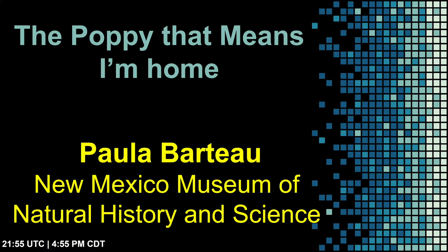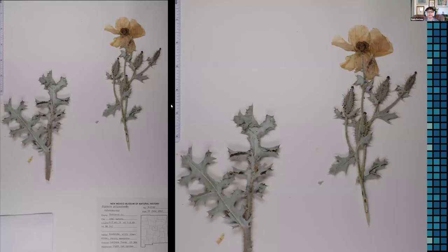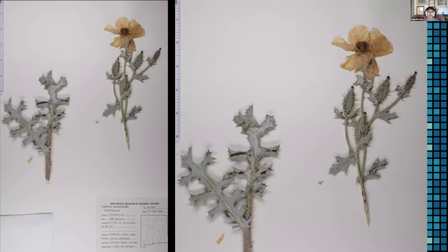Paula Bartow from the New Mexico Museum of Natural History and Science presents 'The Poppy That Means I'm Home.' What does it mean to be at home in the Anthropocene? I work at NMMNH as a data digitization intern in Albuquerque, New Mexico. I've lived in New Mexico for most of my life — it's the fifth largest state by land mass and 37th by population, so very rural. For me, nothing means home like seeing Argemone polyanthemos, or blue-stemmed prickle poppy, which is why my favorite specimen in our collection is Herb 2782. Argemone is a genus in the family Papaveraceae. Prickle poppies are visually distinct with blue-green stems and spiny leaves; they have very large white flowers with bright yellow centers, for which they've been given the nickname 'cowboy's fried eggs.'